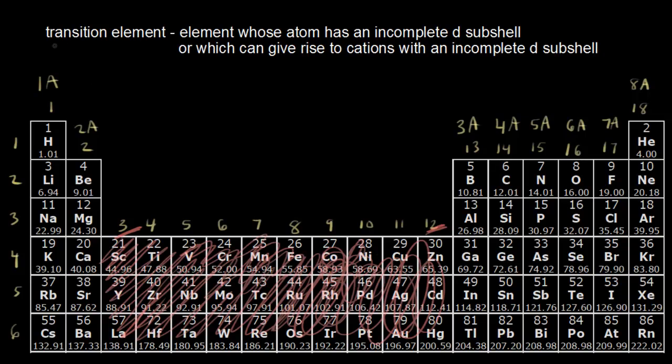And they say that a transition element refers to an element whose atom has an incomplete d subshell. So when you're talking about the d orbitals, we already know there are five d orbitals, and each orbital holds a maximum of two electrons. So five times two is 10. So 10 would be the maximum number of electrons that you could fit in your d orbitals or your d subshells. So let's count that out on our periodic table.